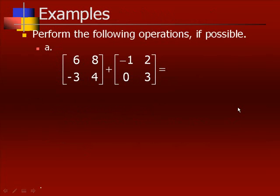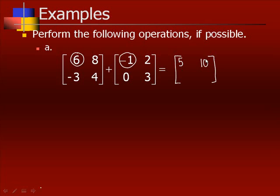To add these two matrices — they're both 2 by 2 — the answer will also be 2 by 2. Row 1, column 1: 6 plus negative 1 is 5. Row 1, column 2: 8 plus 2 is 10. Row 2, column 1: negative 3 plus 0 is negative 3. Row 2, column 2: 4 plus 3 gives us 7.